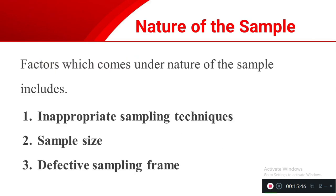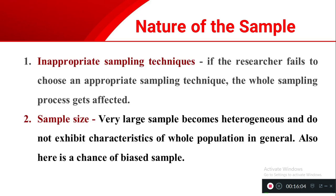The second factor is the nature of the sample, with three sub-factors: inappropriate sampling technique, sample size, and defective sampling frame. For a true experimental research design, using a non-probability random sampling technique gives wrong inferences. You must know which type of technique should be applied in your research, because an inappropriate sampling technique leads to failure in interpreting the result correctly.